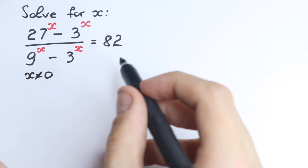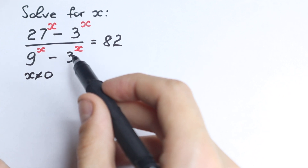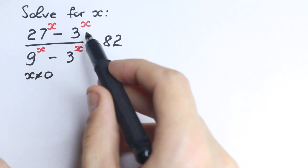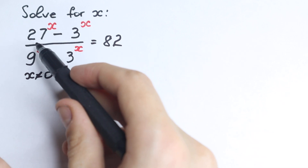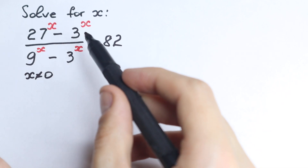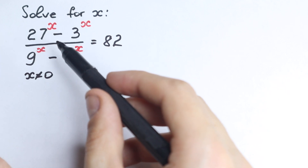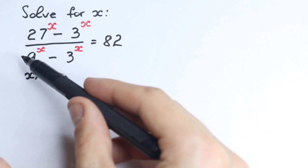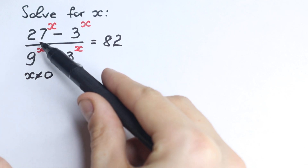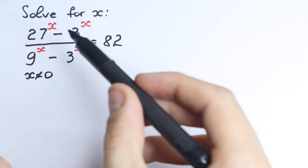Second step: in math it's really great to work with the same bases. Right here we have different bases — 27 and 9 are not the same as 3. So we need to convert them, because 27 equals 3 cubed and 9 equals 3 squared.